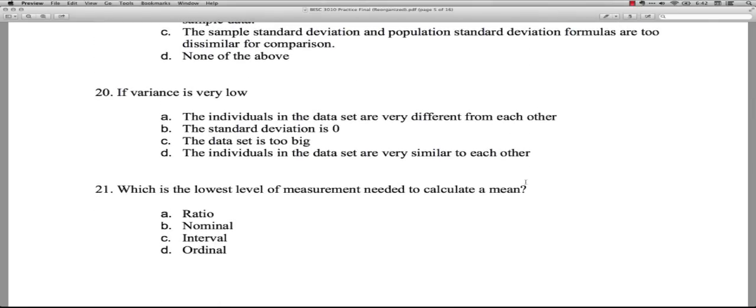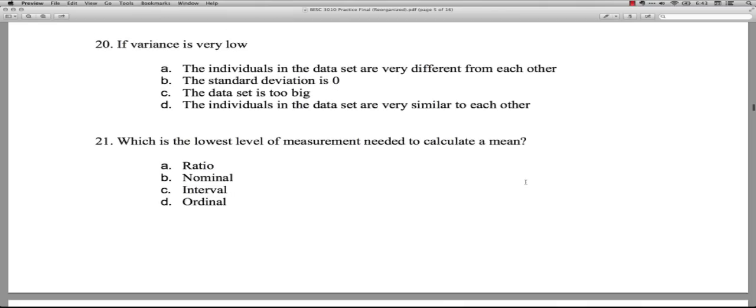All right, if variance is very low, let's see here. The individuals in the data set are very different from each other. No, they're not. The standard deviation is zero. Well, the only way you get a standard deviation of zero is if all the scores are exactly the same, which basically almost never happens. C, the data set is too big. That really has nothing to do with it. D, the individuals in the data set are very similar to each other. Yes, correct. If the variance is low, it's because people are similar to each other on the thing that's being measured. That's an easy one.